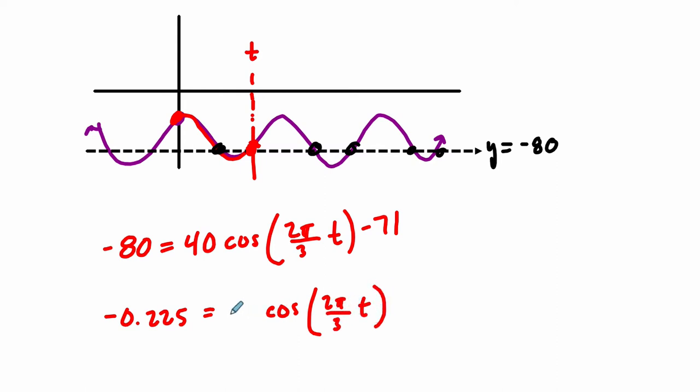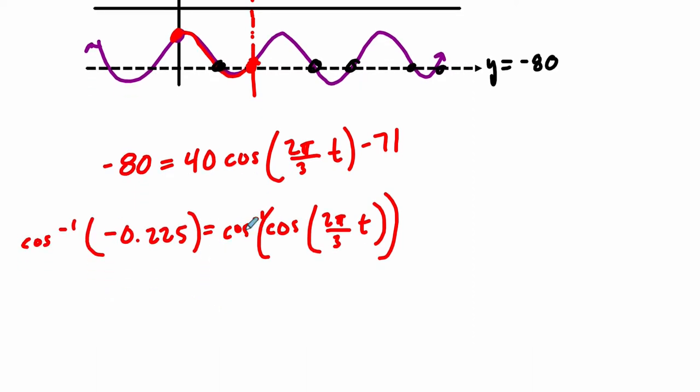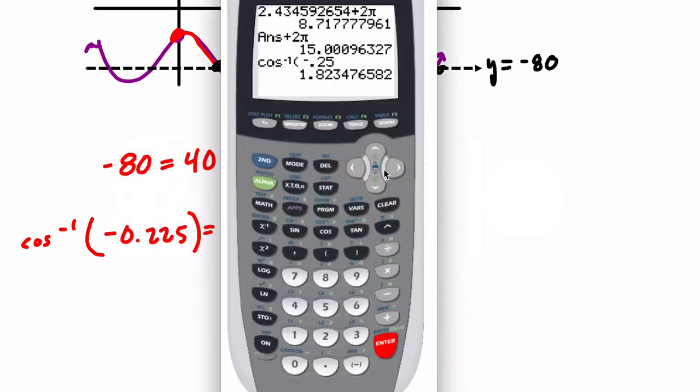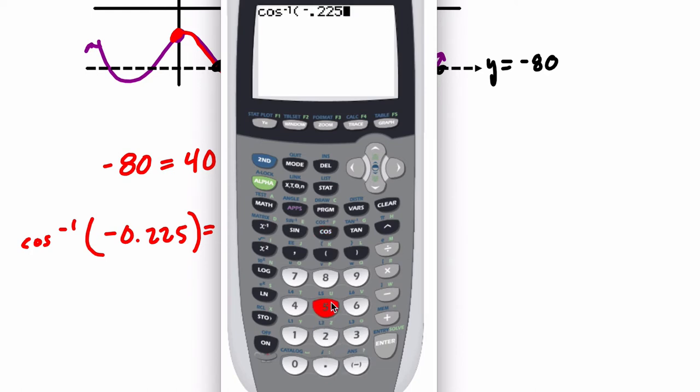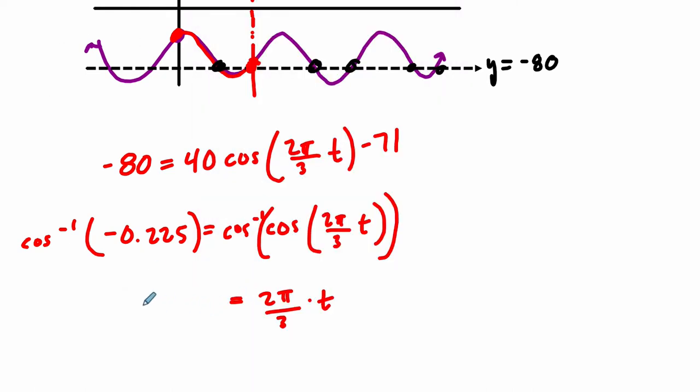That equals the cosine of 2π over 3t. When you want to solve for an equation of the cosine, you take the inverse cosine of both sides, because that will cancel out the cosine. On the right-hand side, they cancel out, and what's left is 2π over 3 times t. And that equals the inverse cosine of negative 0.225. I'm going to clear out some old things I have here, and I hit second cosine of negative 0.225, and we get about 1.7977.